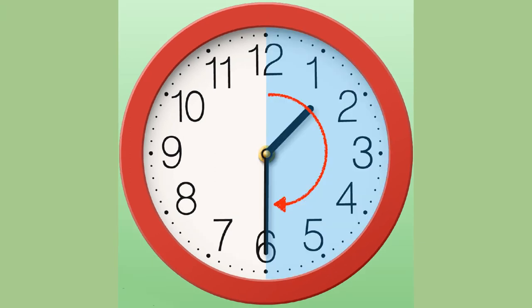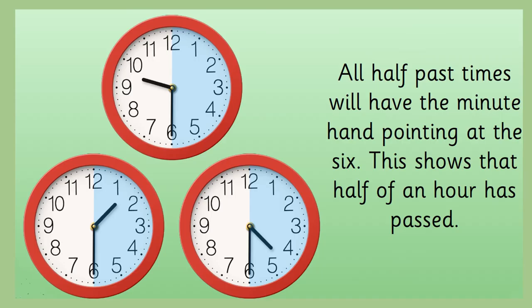So, at a half past time, the minute hand will have travelled halfway around the clock. So, what number is it pointing at? All half past times will have the minute hand pointing at the 6. This shows that half of an hour has passed.